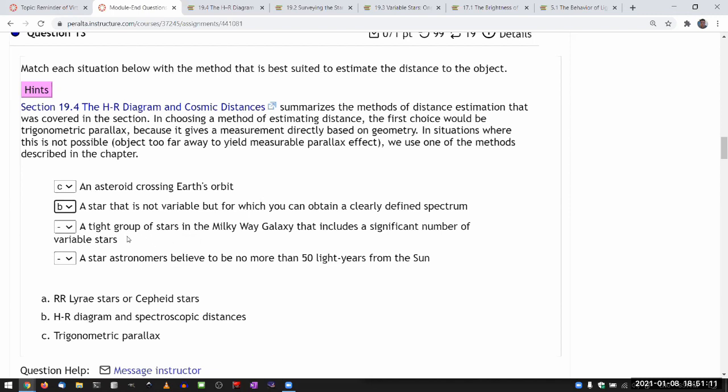And the other two here, a tight group of stars in the Milky Way galaxy that includes a significant number of variable stars. So, it's those variable stars to which you can measure distance, and the other stars that are around it, you measure their distance by knowing distance to these. So, that would be the variable, and depending on what type of variable stars are nearby, it would be one or the other, or both.